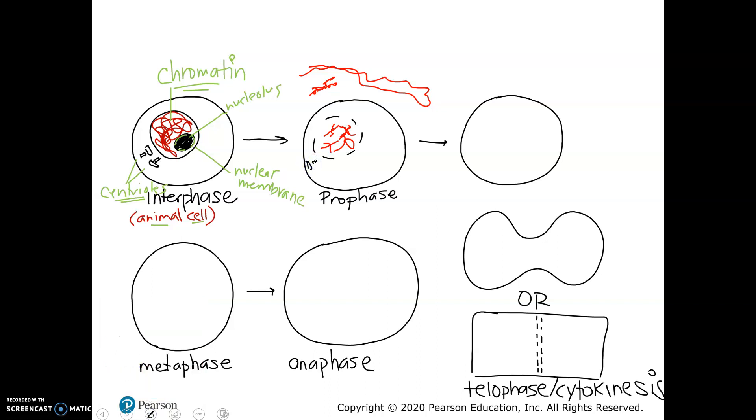Those centrioles are also going to start moving towards opposite sides. So you're going to see the centrioles sort of start heading towards, they're going to call those two sides poles. And you're going to see these spindle fibers start to appear. Or sometimes it's called the spindle apparatus.